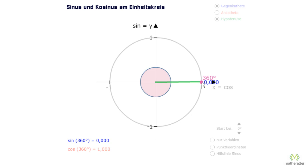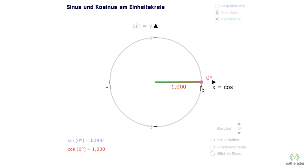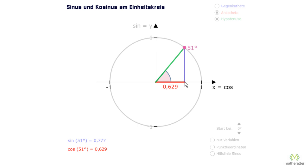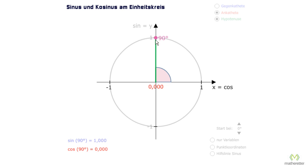And of course you also need the same for cosine. We always get cosine values by reading values from the x-axis. Cosine of 0 degrees is 1, since we are on the x-axis. The cosine value gets smaller; the cosine value is 0.629, and if we now go to 90 degrees, we hit the x-axis directly at 0. That is, cosine of 90 degrees is 0.